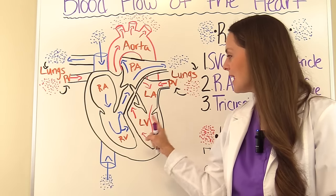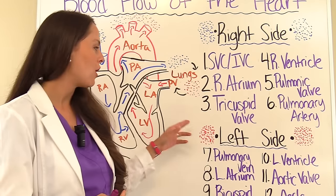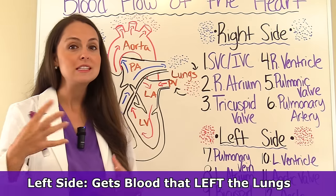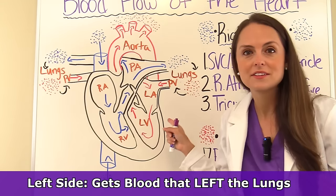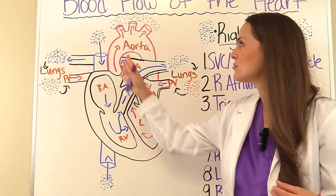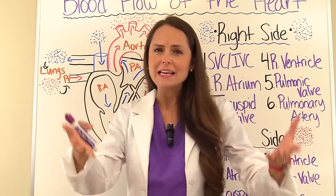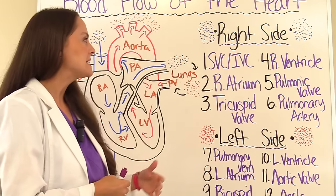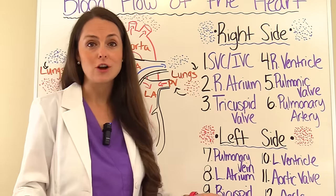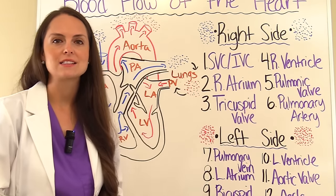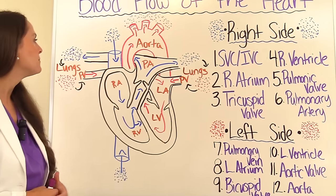The left side of the heart is responsible for oxygenated blood. It's just received oxygenated blood that has left the lungs to go throughout the body. What's really awesome to make it even easier to memorize is that each side — the right and the left — has six structures where that blood has to flow. So let's go through the blood flow of the heart.